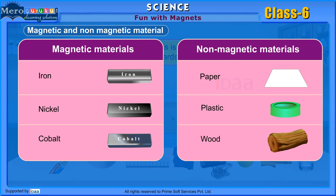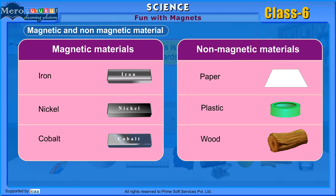Materials which get attracted towards a magnet are called magnetic materials. Iron, nickel, and cobalt are magnetic materials. Materials which do not get attracted towards a magnet are called non-magnetic materials. Paper, plastic, and wood are non-magnetic materials.